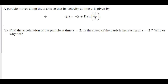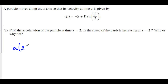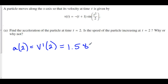To find acceleration at t equals 2, take the derivative of velocity and evaluate at t equals 2. Using a calculator, the acceleration at t equals 2 is approximately 1.588.